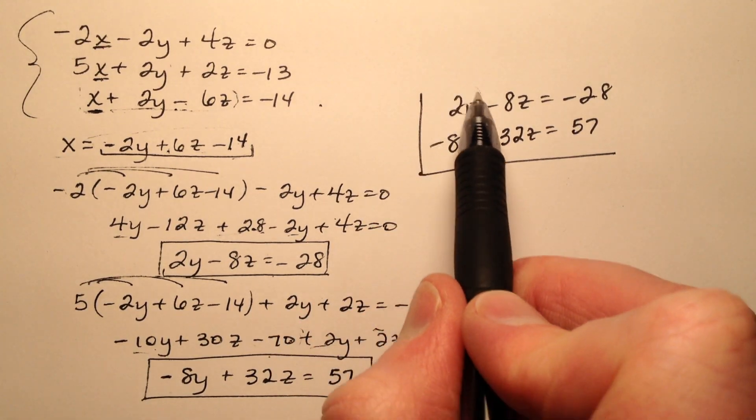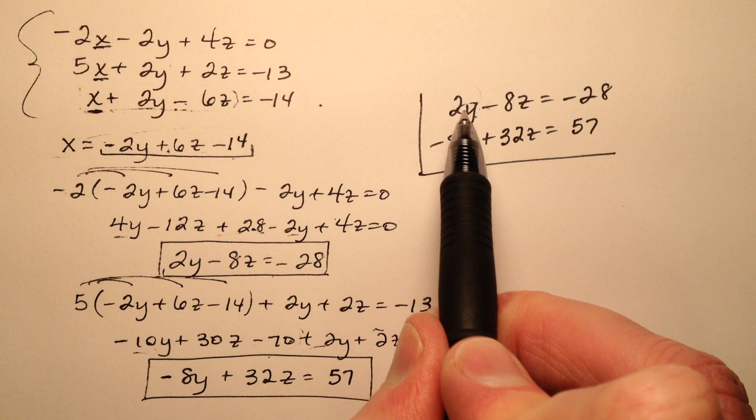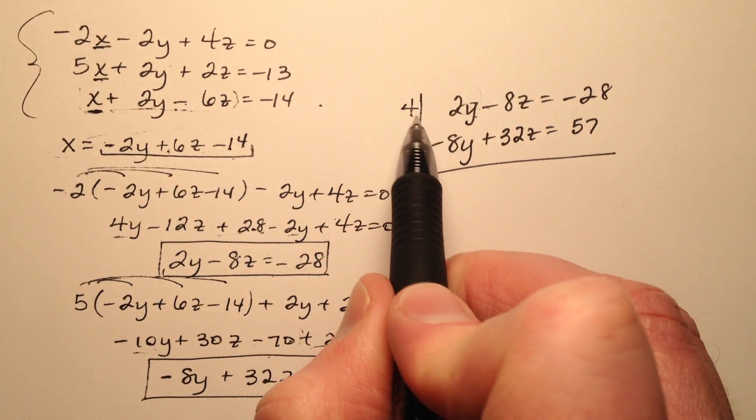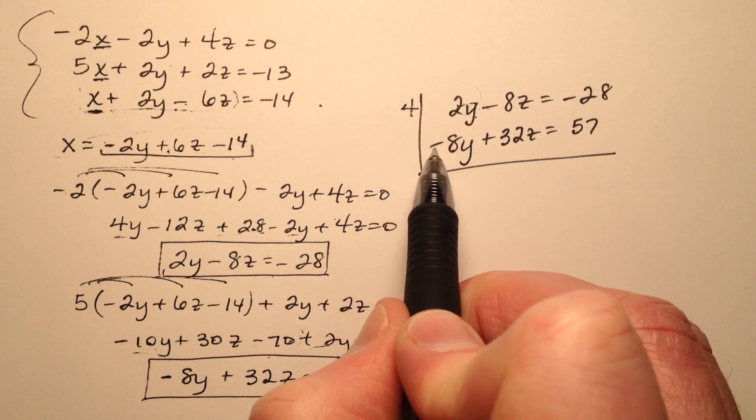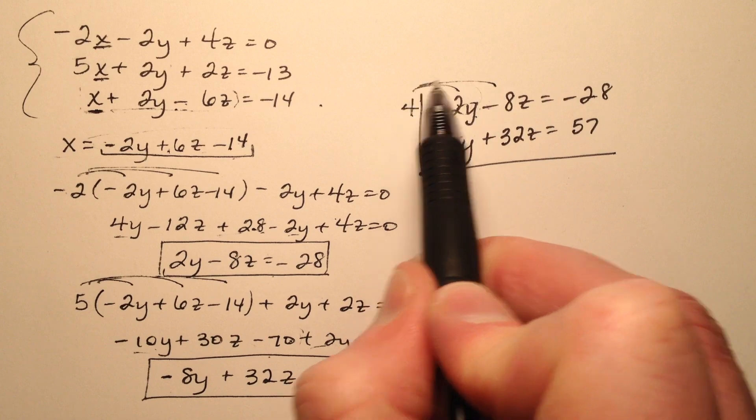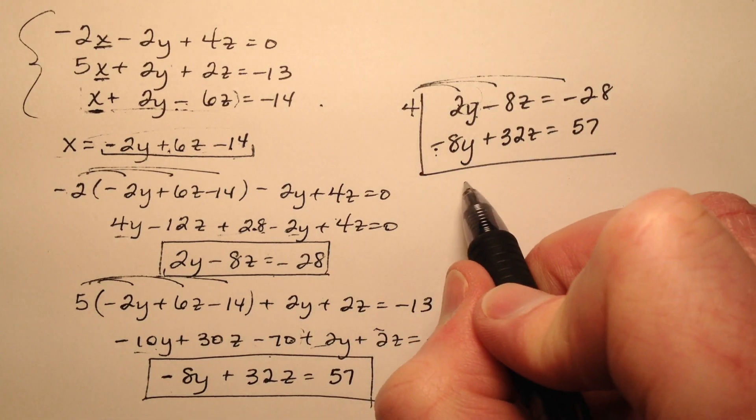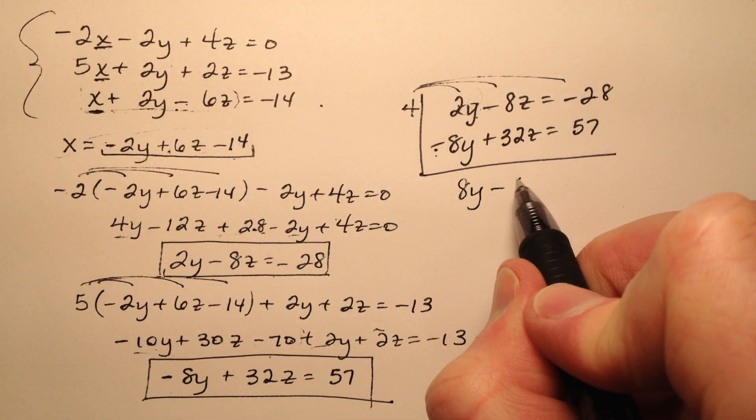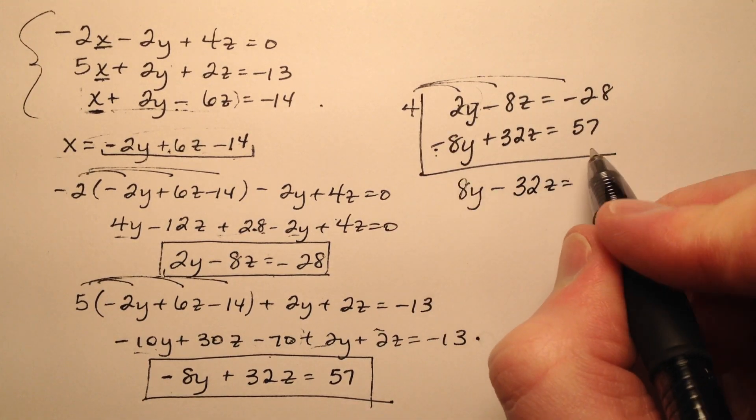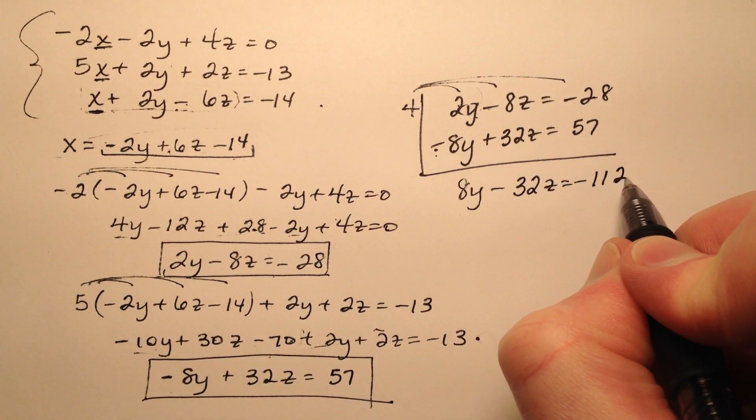So let's work on eliminating our y's. I noticed that 2 and 8 - well, if I multiply 2 by 4 I can get 8, and this will be positive, this will be negative, so I will have opposite signs. So let's go ahead and run that 4 through. So 8y minus 32z, and that's going to equal a negative 112.